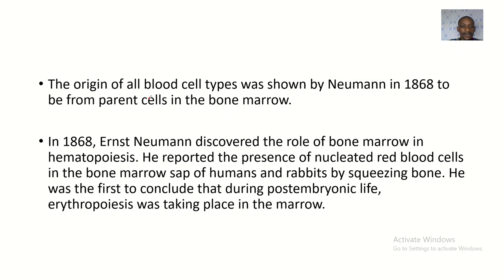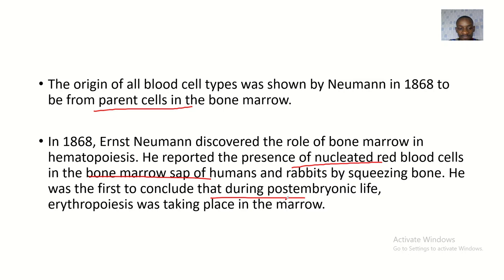In 1868, Franz Ernst Neumann showed that the origin of all blood cells comes from parent cells in the bone marrow. He discovered the role of bone marrow in hematopoiesis, reporting the presence of nucleated red blood cells in the bone marrow sap of humans and rabbits by squeezing bone. He was the first to conclude that during post-embryonic life, erythropoiesis takes place in the bone marrow.